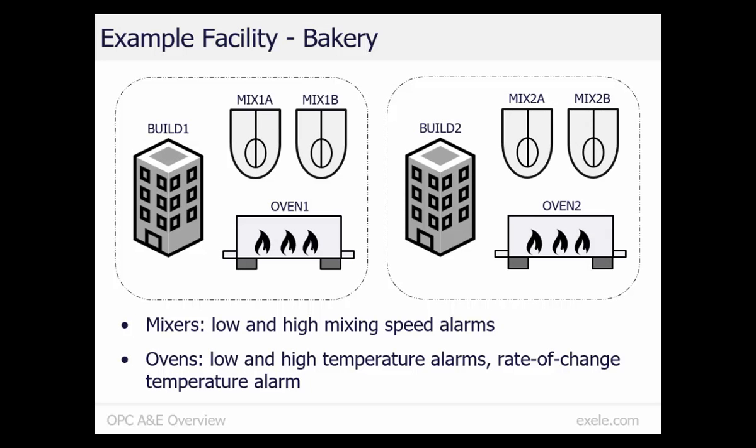Our example facility is a bakery. The bakery contains two buildings, and each building contains two mixers and one oven. The buildings, mixers, and ovens have names, which we will use to address them in OPC A&E. The mixers have alarms for low and high mixing speed. The ovens have alarms for low and high temperature, as well as a rate of change alarm for temperature.